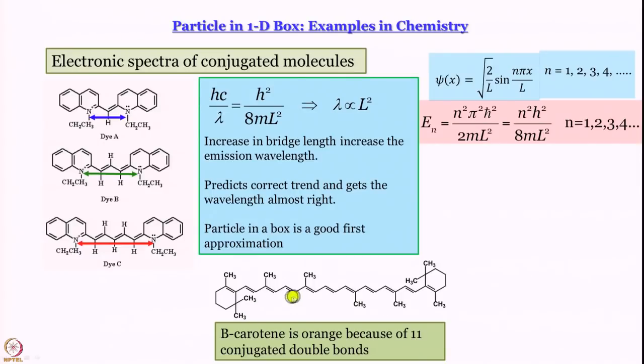However, there is a problem: if one tries to work out the expected absorption wavelength of beta-carotene using the particle in a box model, there is not good agreement. The trend — that lambda more or less changes along with L² — is all right, but it is not really quantitative. The longer the chain, the greater the problem, because the number of nuclei and electrons increases, leading to greater disagreement. The agreement between 251 and 258 nm is almost as good as it gets; as chain length increases, agreement becomes unsatisfactory to very bad, but the right trend is still captured.